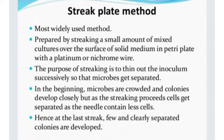First method: streak plate method. A mixed culture is streaked on the surface of a solid medium in a petri plate. The purpose of streaking is to thin out and separate individual microbes so that isolated colonies are formed. A needle is used to separate the seeds (individual cells) to obtain pure colonies.